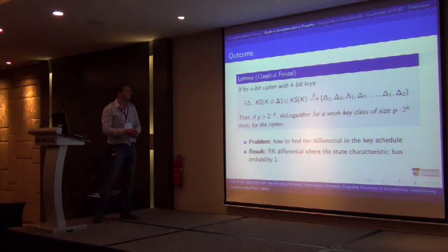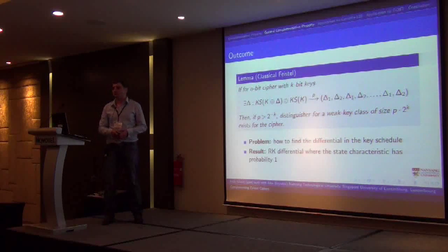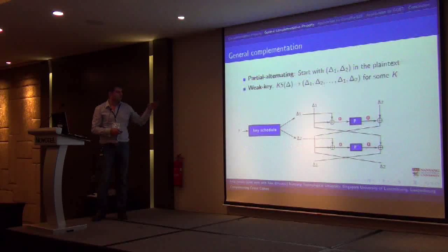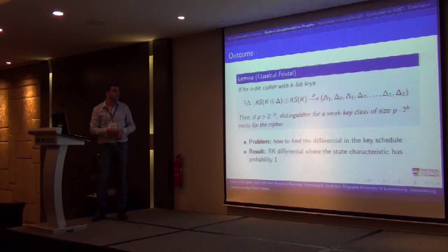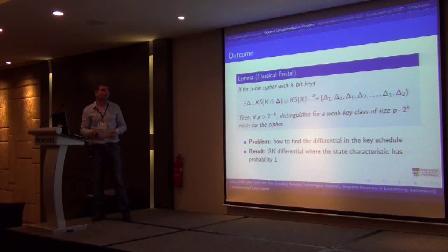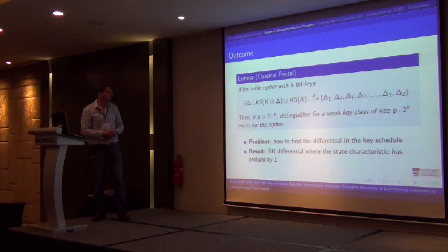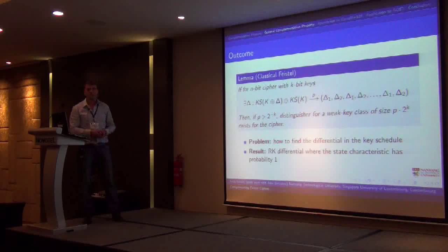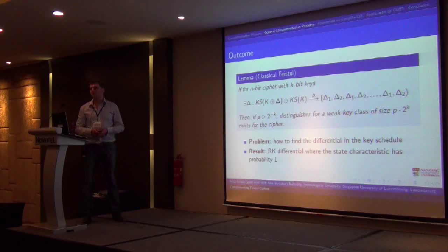Basically, what this says is that if you can produce this type of alternating difference in the sub-keys, then you have a weak key class. Because for any key such that adding delta difference in the key produces this difference in the sub-keys, this will hold. So you have a weak key class for this Feistel cipher, and you can use it as a differential distinguisher. The main problem is how to find the differential in the key schedule. The good thing is, once you have the differential in the key schedule with alternating differences, the differential in the state holds with probability one.